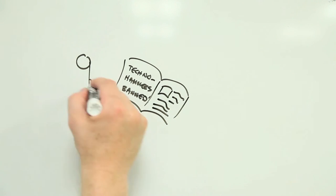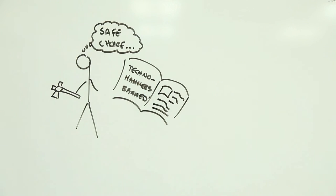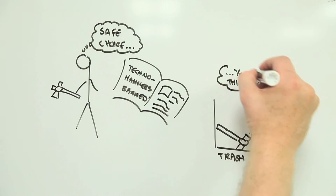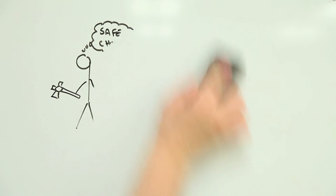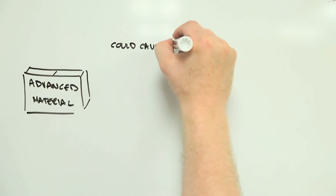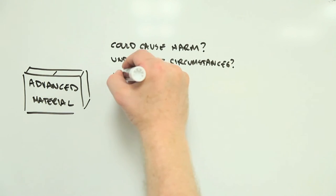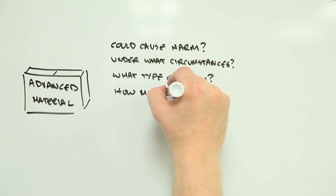It implies that the only interesting risks are the new and unusual ones. And it ignores the reality that many common risks associated with materials, novel or otherwise, remain highly important and poorly understood. When it comes to novel materials and advanced materials more generally, a much better question is, can this material potentially cause harm? Followed quickly by, under what circumstances, what type of harm, how much, and how can it be avoided?